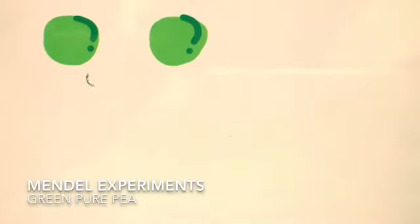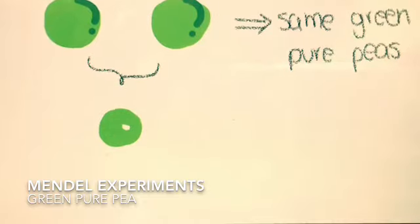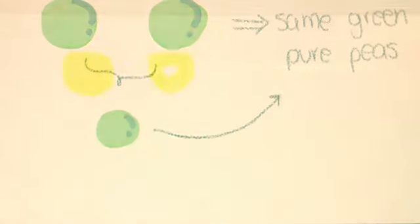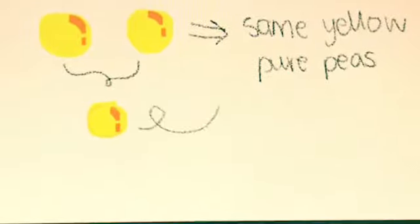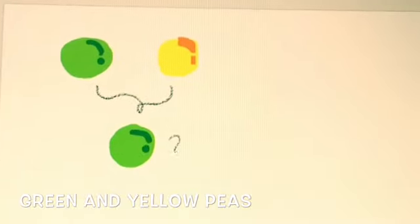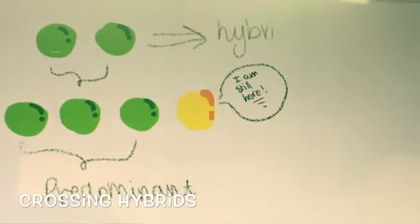His first experiment consisted of crossing two pure green pea plants and seeing the result, which was one of them with a green color. He did the same with yellow pure peas. What he did was to cross the result of the green one with the yellow one, and it was another green. He repeated the experiment and the result was three green peas and a yellow one, which means that the yellow gene wasn't lost.